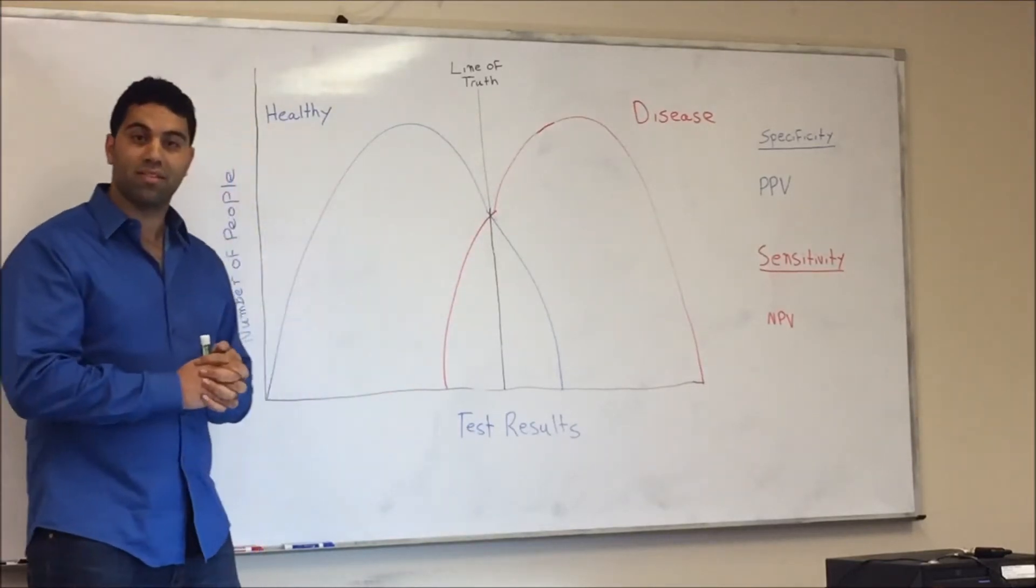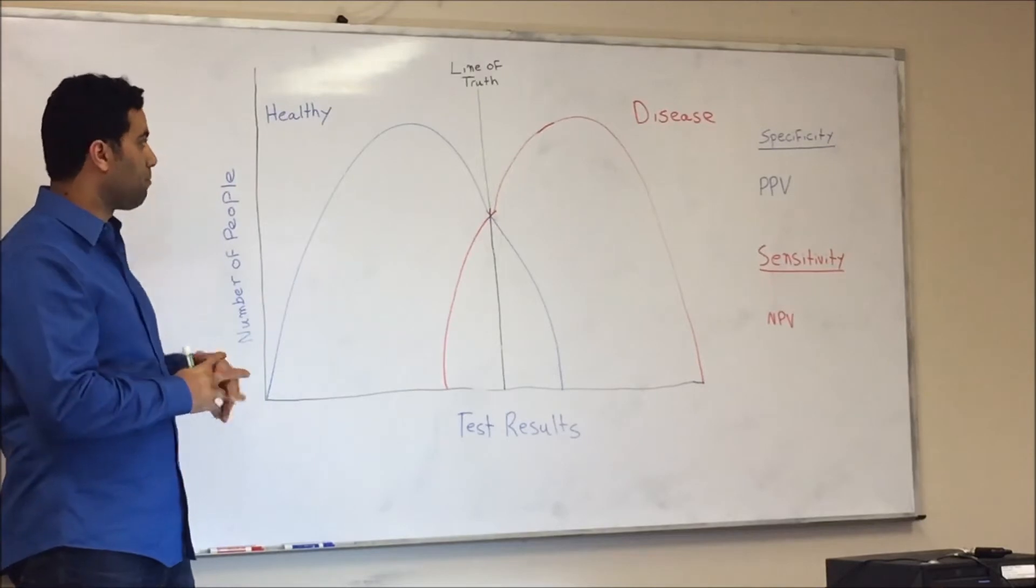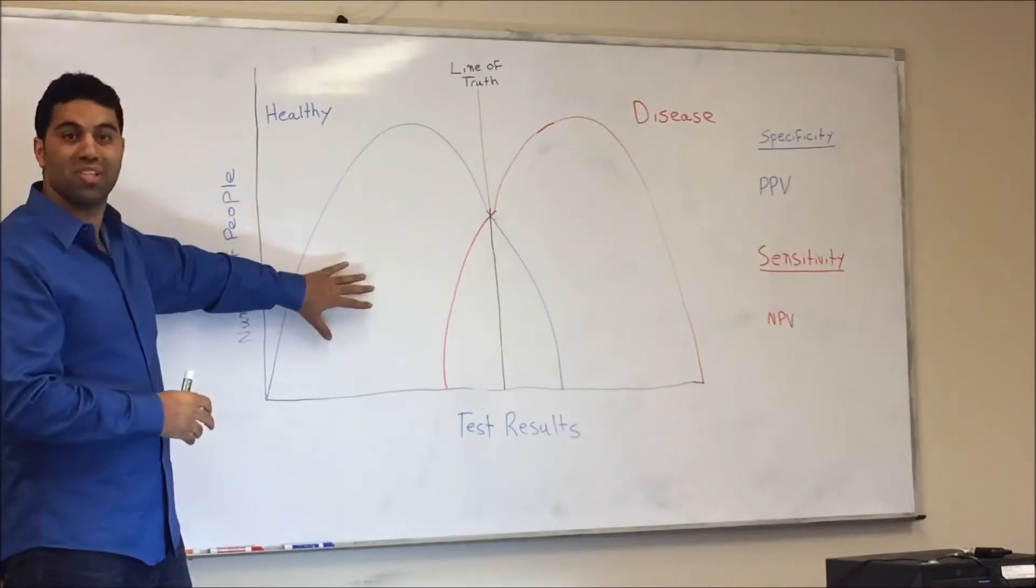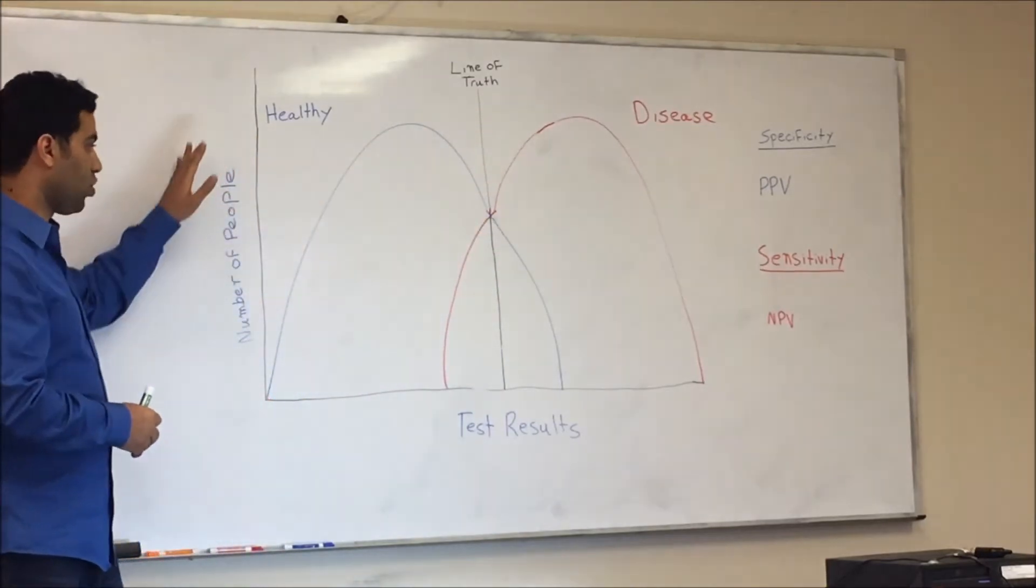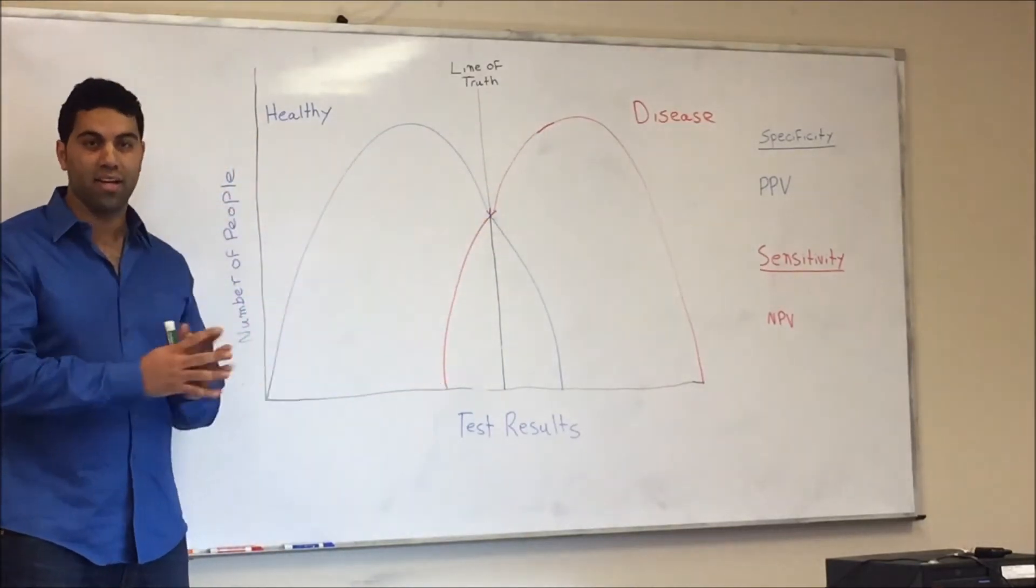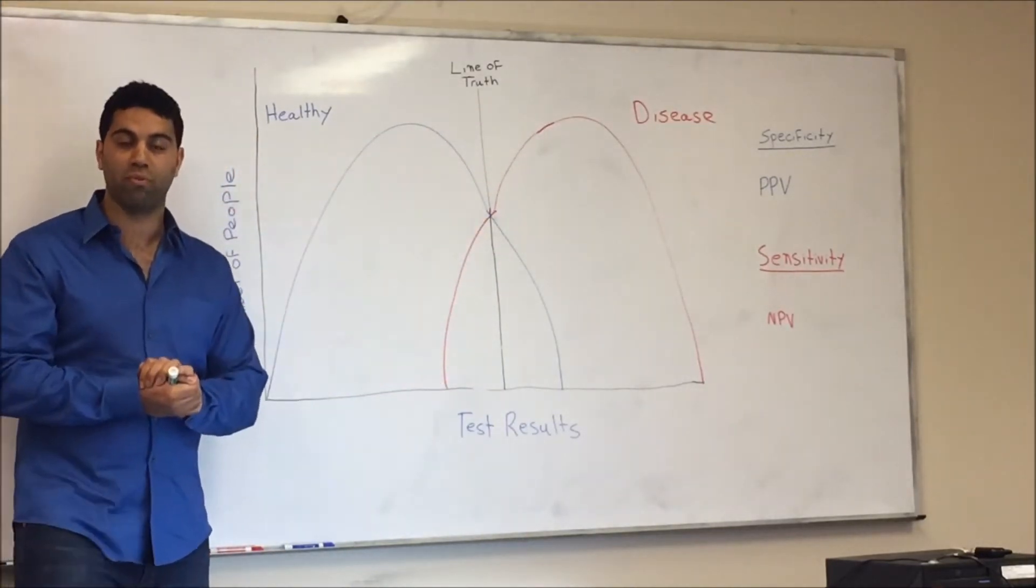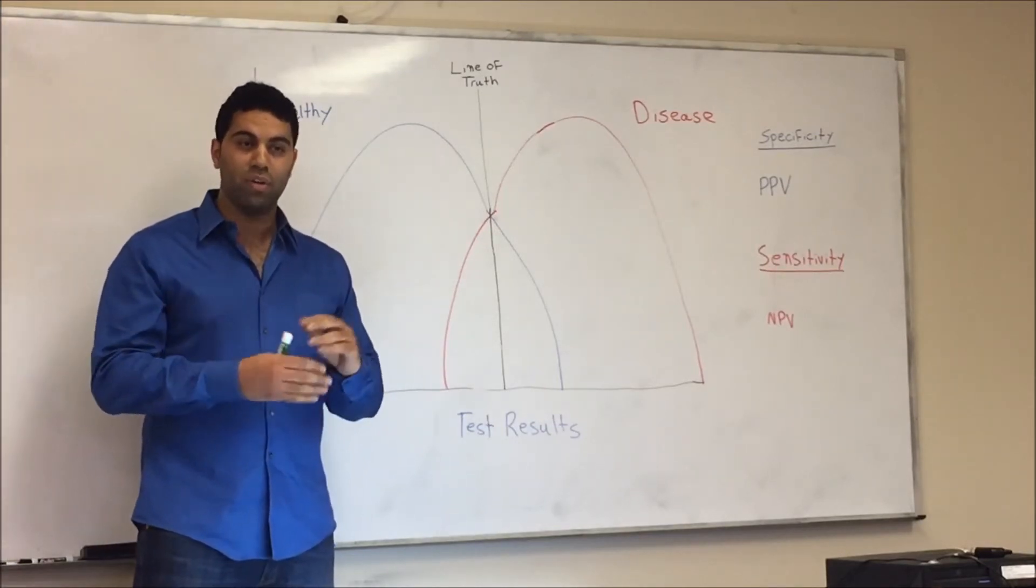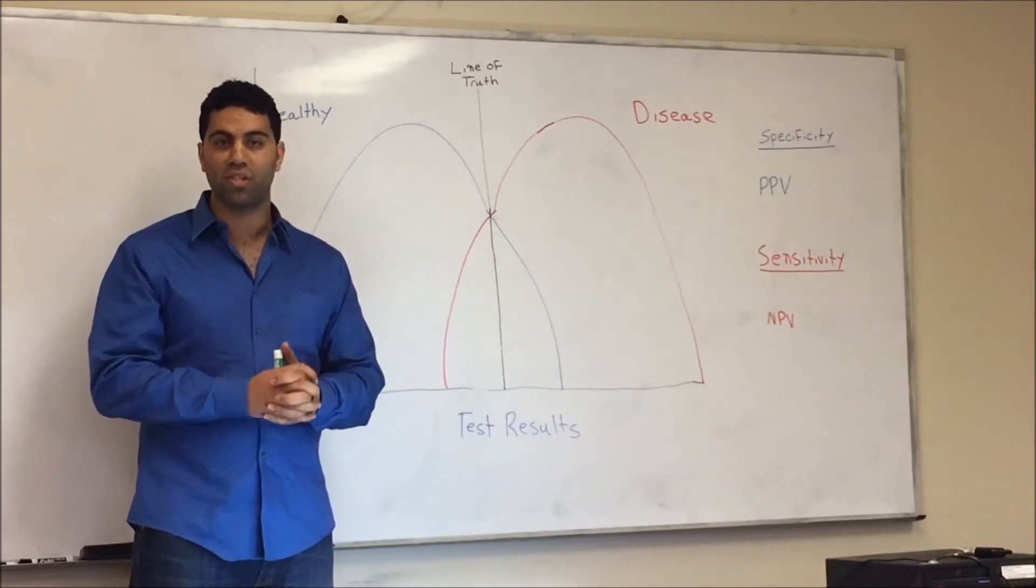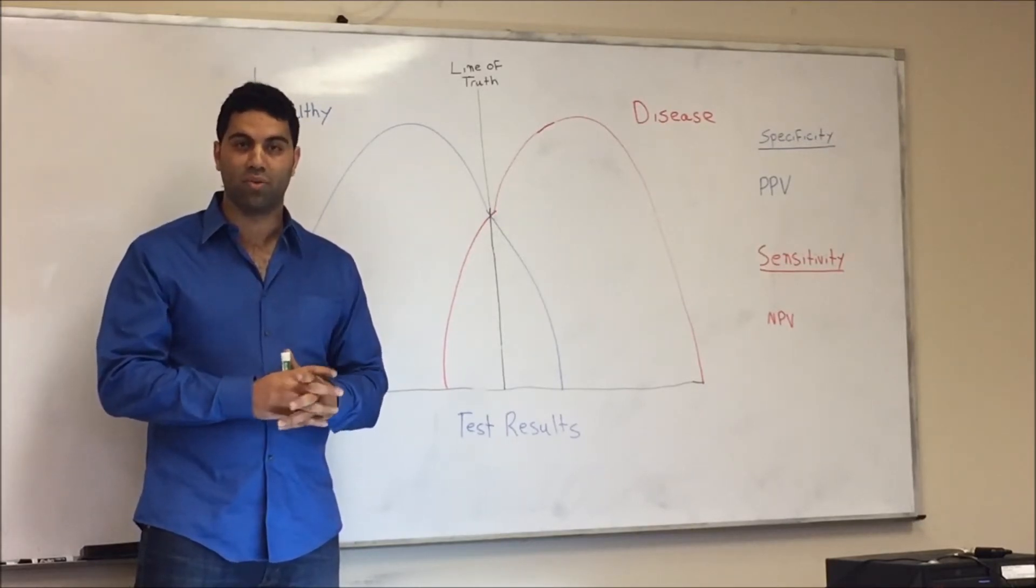So when it comes on the test, or any question exactly, what happens is that they present it to you just like that. So they tell you who's healthy, who's sick, and they show you what the x-axis are. Nothing beyond. And you need a few more information to be able to answer the question. So let's start with that. Whenever you see this, regardless of what the question is, do what I'm going to do next.